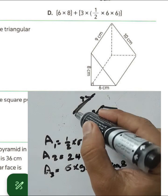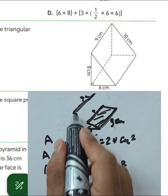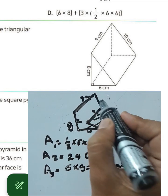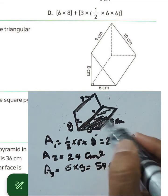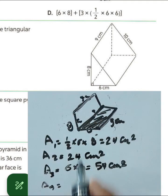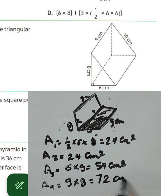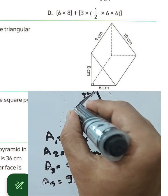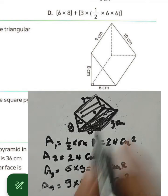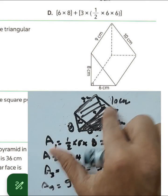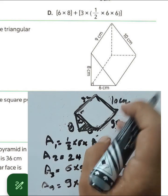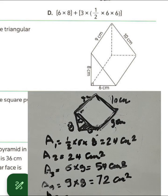The second rectangle is the upright face with dimensions eight centimeters by nine centimeters, giving an area of nine times eight equals 72 square centimeters. The third rectangle, on the slanted face, has dimensions ten centimeters by nine centimeters, giving an area of ten times nine equals 90 square centimeters.